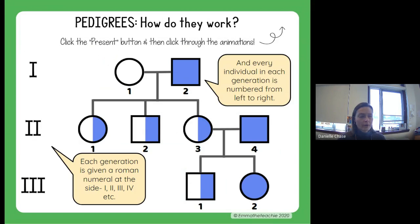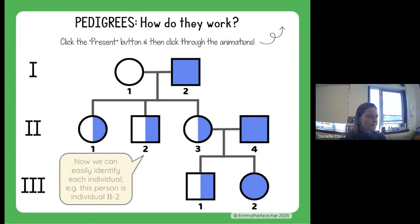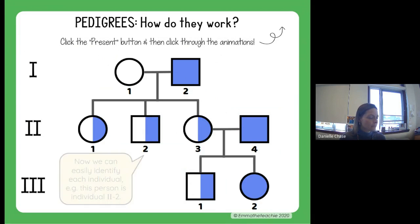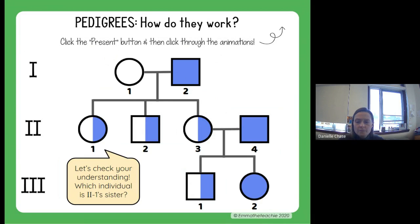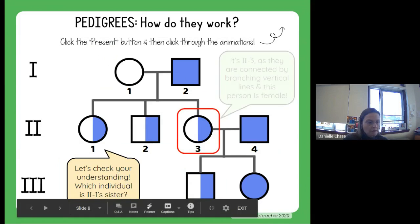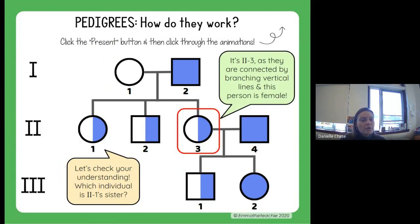Now you can identify this is a person in generation two, individual number two. And this one here — generation two, individual number one. Think about which individual on here is their sister and how you would identify them. This is going to be the sister because they share the same parents. So that's generation two, individual three.